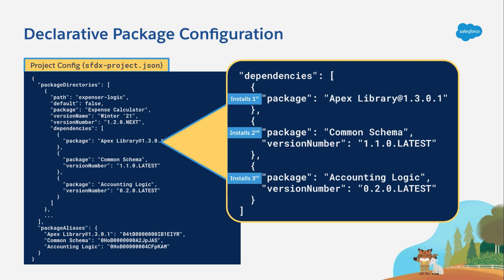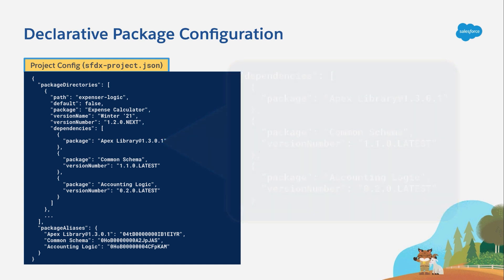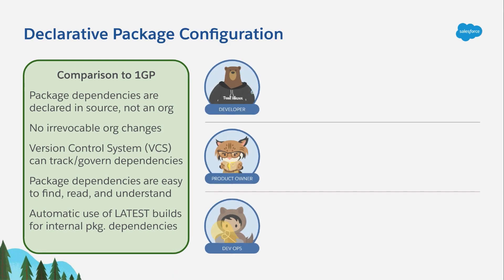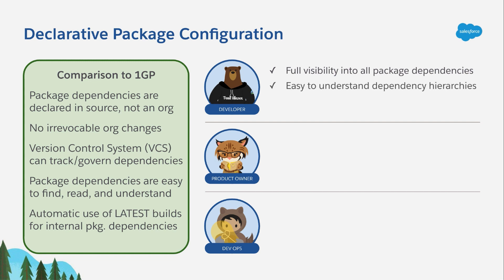Why is the way 2GP does this better than how 1GP does? From the developer's perspective, full visibility into all package dependencies is a really big deal, because developers might not even know what dependencies exist in a 1GP project. With 2GP, the dependency hierarchy is clear and easy to understand — they don't have to go to a packaging org to look up dependencies; it's right there in sfdx-project.json, declarative. And this ability to use keywords like "latest" and "next" lets you build internal packages with less overhead because you're not keeping track of package version IDs.